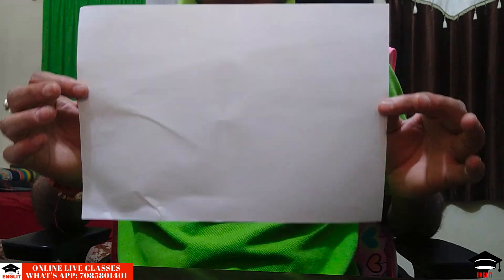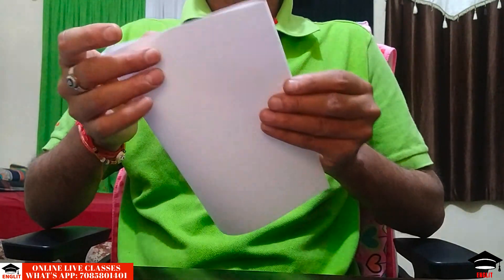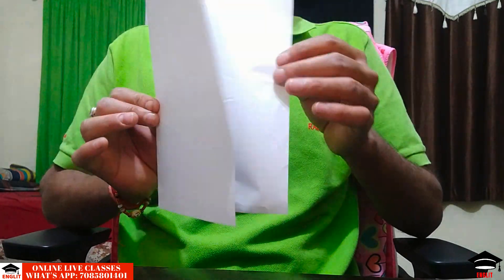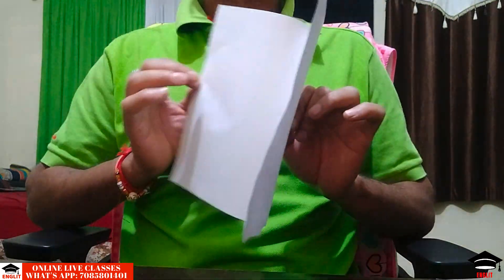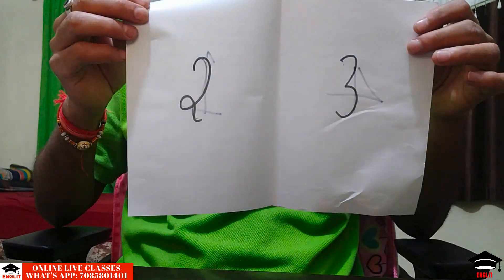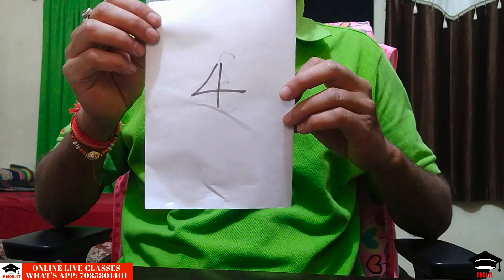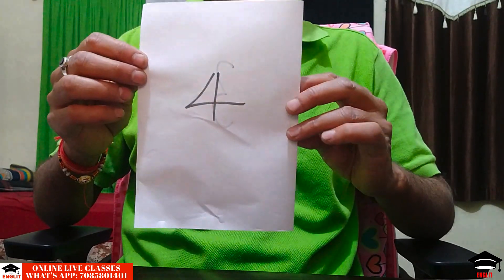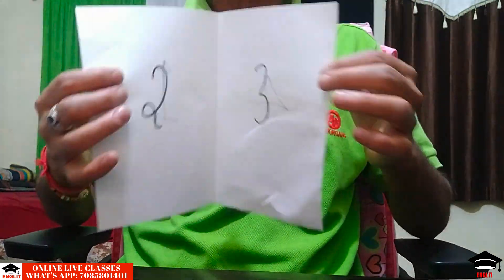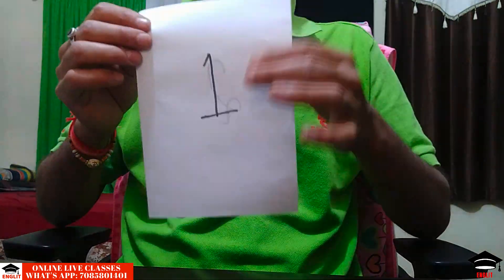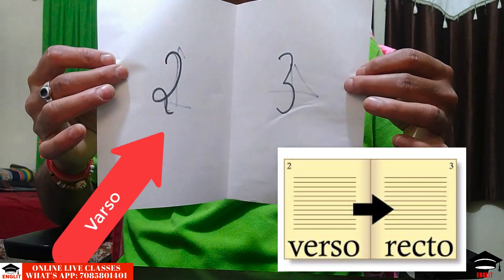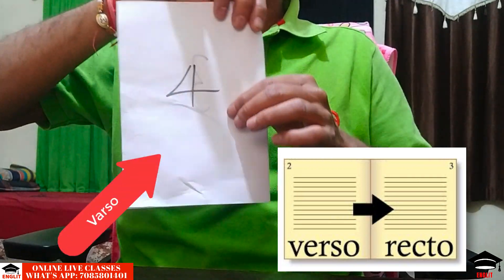Imagine this is a full printer's sheet. If you fold it once, it will make two leaves and four pages — first page, second page, third page, and fourth page. So every folio has four pages and two leaves, with two fronts and two backs. The front part is called recto and the back part is called verso.